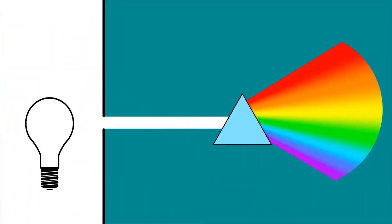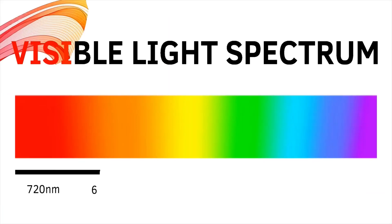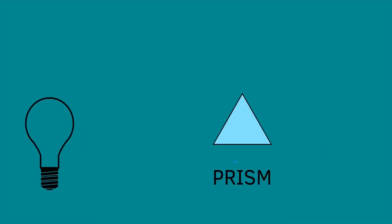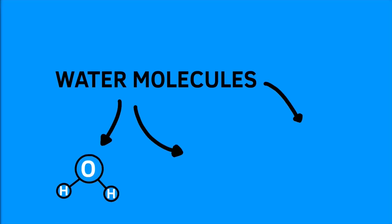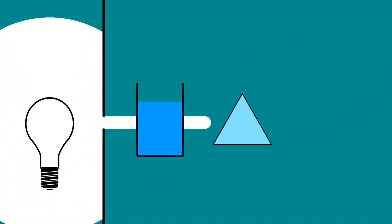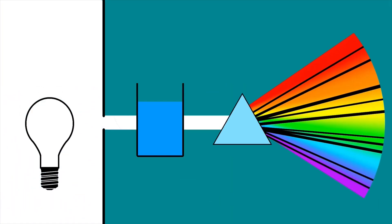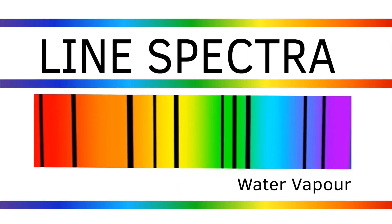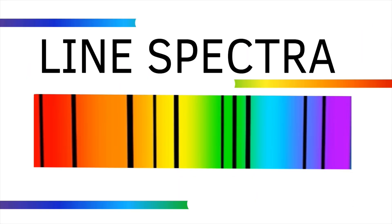Using spectroscopy, we can split light into different wavelengths, producing the visible light spectrum. But if water is added between the light and the prism, the spectrum produced no longer contains all the colors. This creates a line spectra, where the black lines indicate the light absorbed by the water molecules.